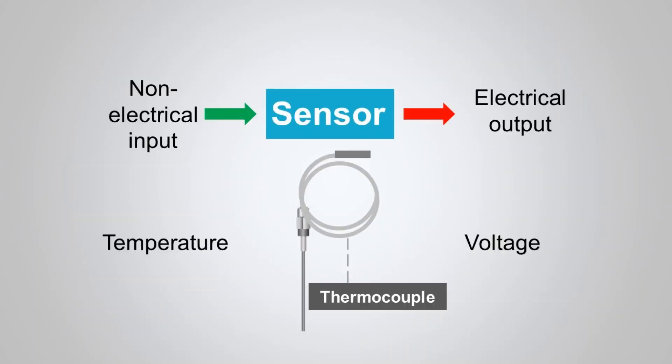A sensor is an input transducer with a non-electrical input, intended to convert a non-electrical quantity into an electrical signal in order to measure that quantity. For example, a thermocouple, which is a temperature sensor, converts non-electrical input — that is, the temperature — into an electrical signal, that is, voltage.